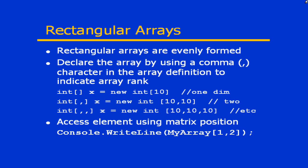Rectangular arrays are called so because they are evenly formed. What we actually end up with conceptually is a nice, even rectangle. If you think of a two-dimensional array as a table, you can see that you would have exactly the same number of columns for every single row, and the same number of rows for every single column. That's a rectangular array.